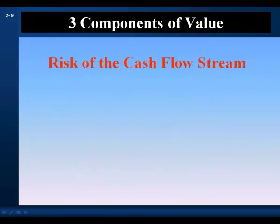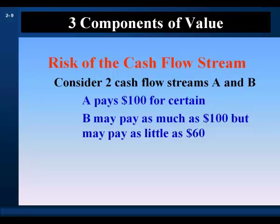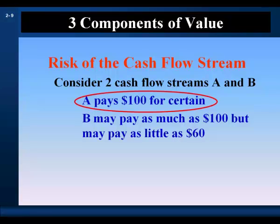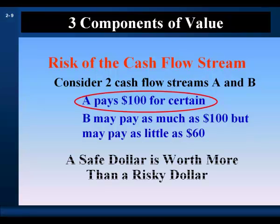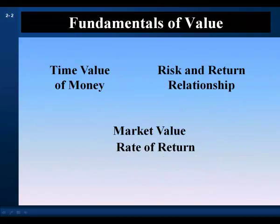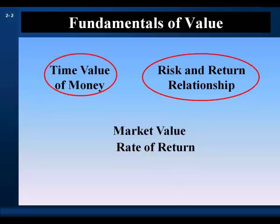The third component of value is the risk of the cash flow stream. Consider two cash flow streams, A and B. A pays $100 for certain — it's guaranteed. B promises to pay $100, but there's a possibility it may pay as little as $60. A rational person would choose A; we're risk-averse and prefer a sure thing to a gamble, everything else equal. A safe dollar is worth more than a risky dollar. From these components of value come two fundamental concepts: the time-value of money and the risk-and-return relationship.